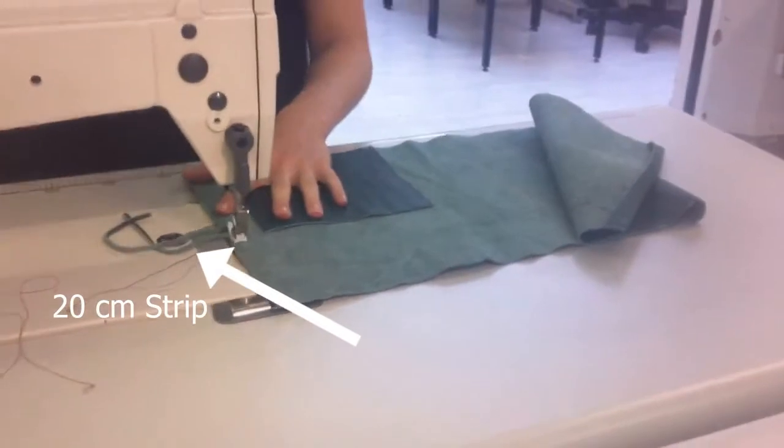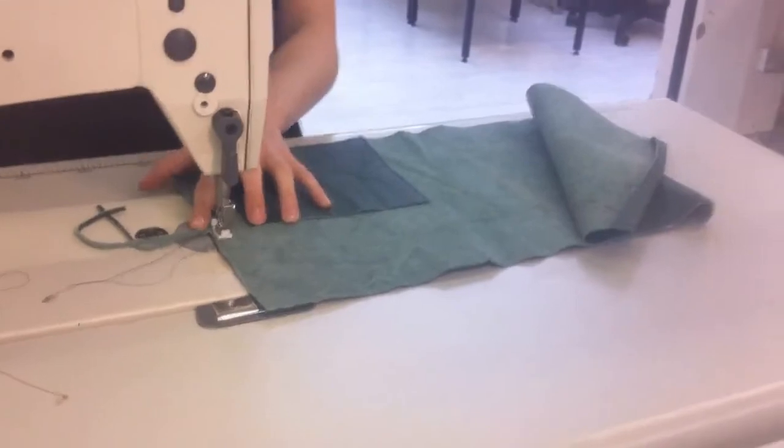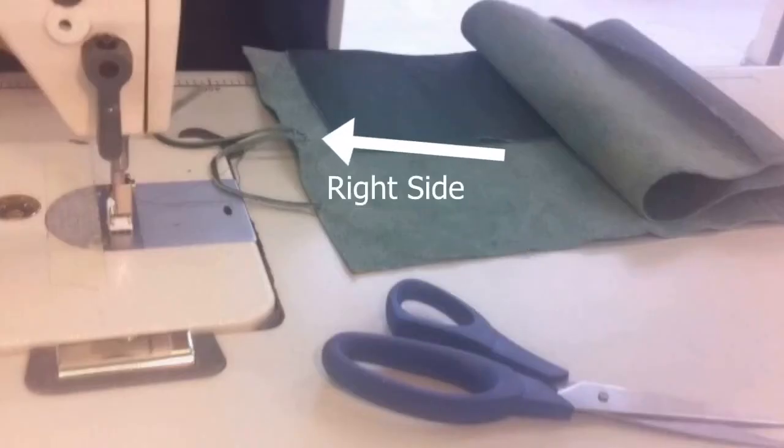From your leftovers, cut a 20 centimeter strip. This will act as the fastening to go around your butterfly clip. Attach it to the inside right side of your notebook case.